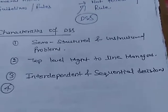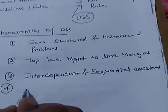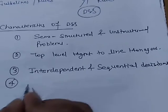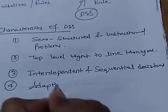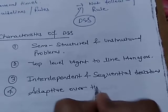Point number four: DSS is adaptive over time. This is the most important characteristic of a decision support system.